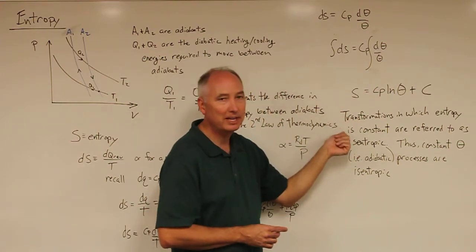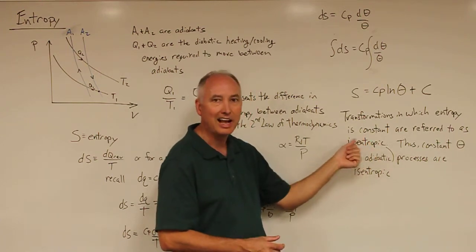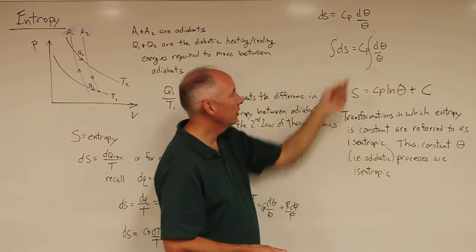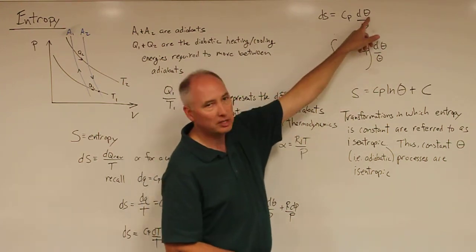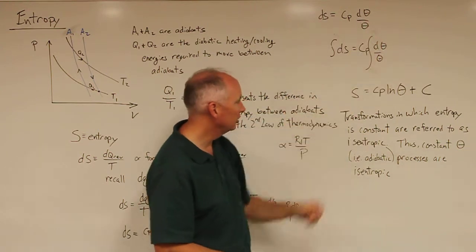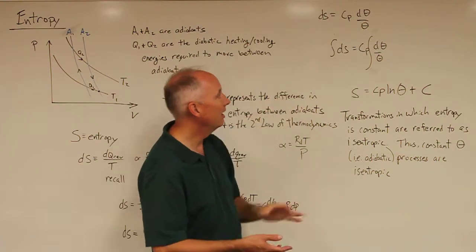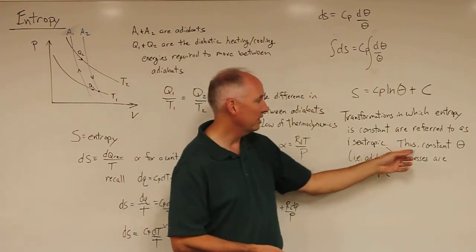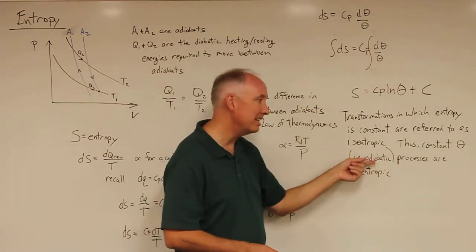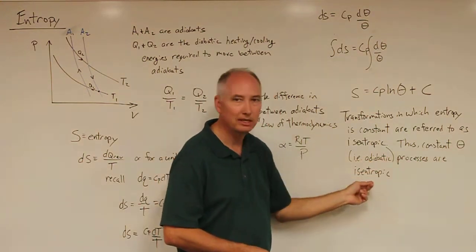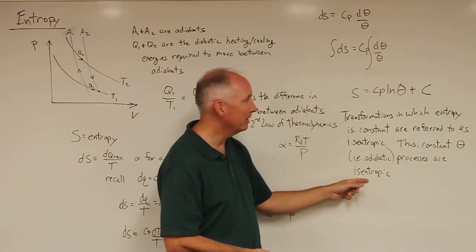For transformations in which entropy is constant, these are referred to as isentropic. You can see clearly that an isentropic process would be one in which potential temperature does not change. So if d theta equals zero, then ds is zero, and there's no change in the isentrope. Thus, constant potential temperature processes, which were also adiabatic, are isentropic. By extension, adiabatic processes are by definition isentropic.